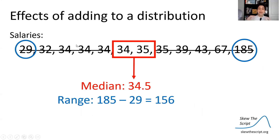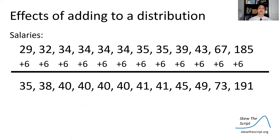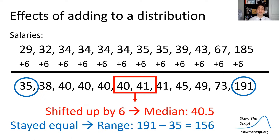We find the median and the range of the distribution. The median is $34,500 — that's the central data point. The range between the max and the min is $156,000. Now let's say the new bill made it so that everyone gained $6,000 — a flat raise. So you add six to every data point. The new median is $40,500. However, the range — the spread — stayed the same at $156,000.